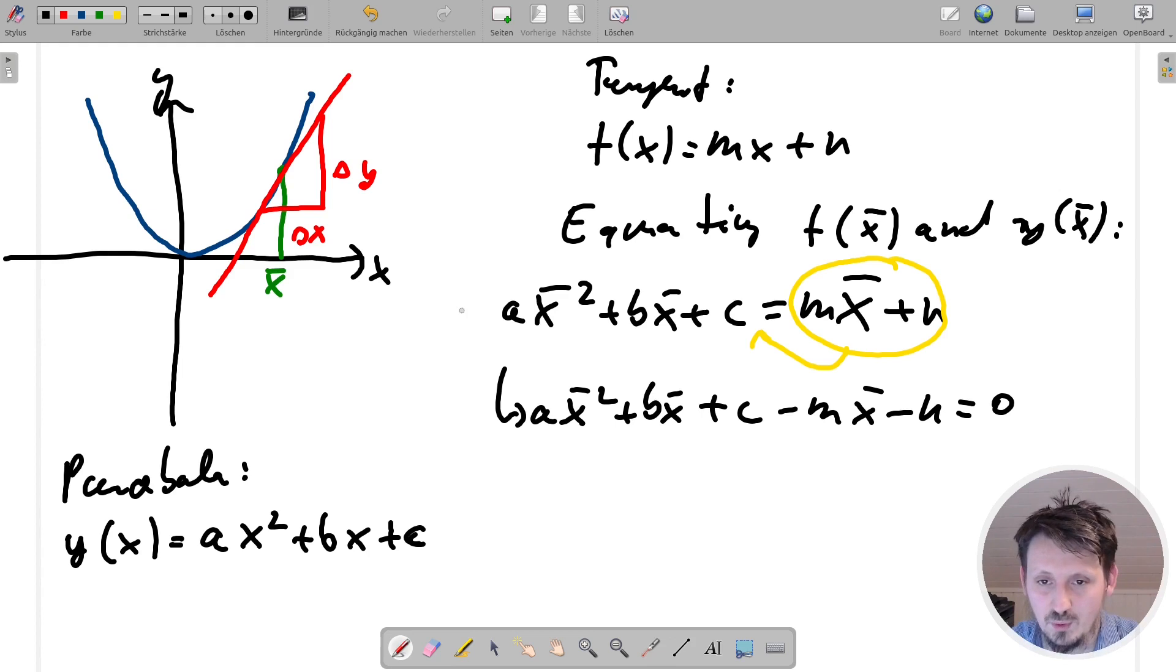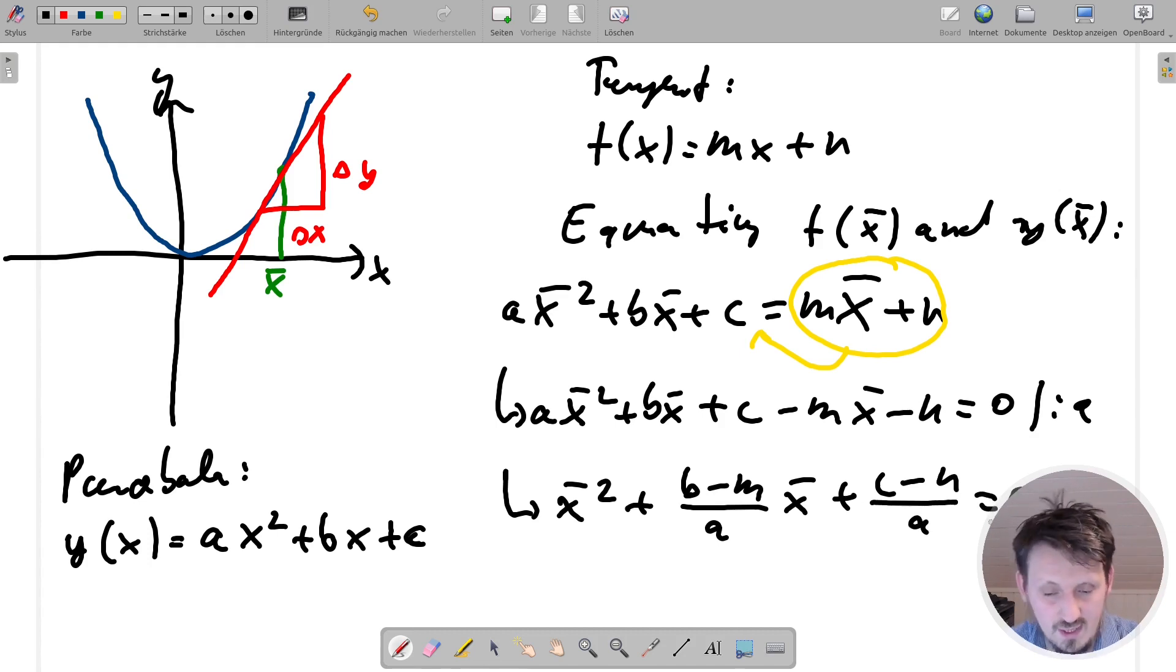And then what we can do in the next step, we want to use PQ formula for solving that. So in order to do that, we divide this whole equation here by a. So of course, here in the beginning, it vanished. So what we can write now x bar square plus these two parts of that sum we can actually we can combine now so what we can write here now is b minus m divided by a and then x bar. And the similar thing we can also do with c and n. So we can write here c minus n divided by a equal to zero. On the right side, nothing changes, actually.